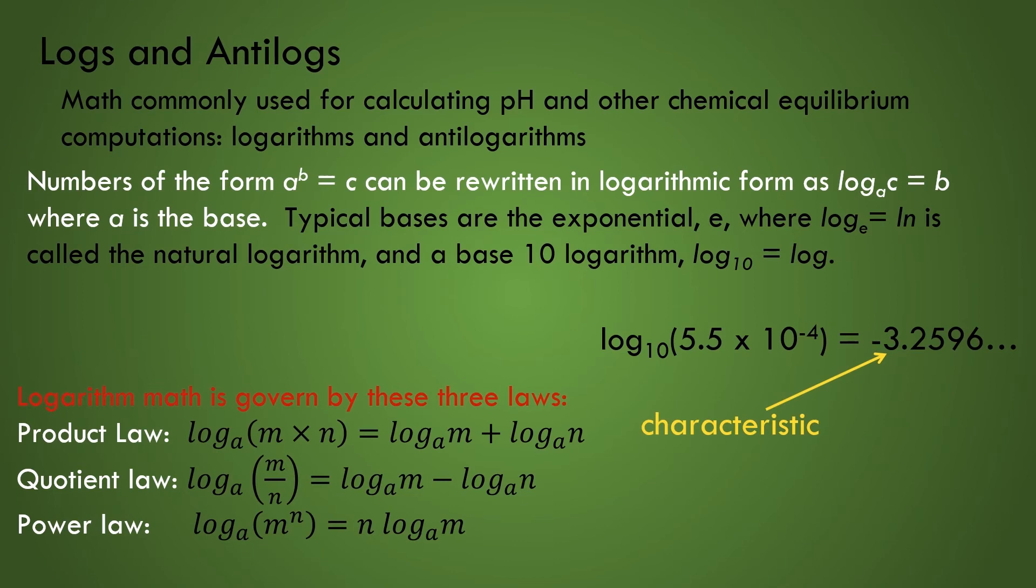The result can be broken down into what we call the characteristic, which is the integer part of a log, the minus 3 in this example, and the mantissa, which is the fractional or decimal part of the log, the .2596 part of our example. Now the question is, how do we incorporate sig figs so we know where to round off the mantissa in a logarithmic calculation?